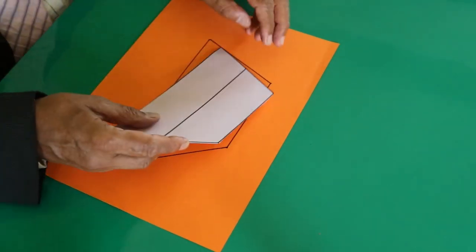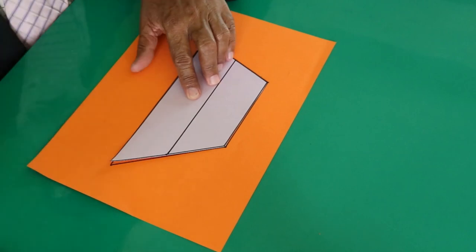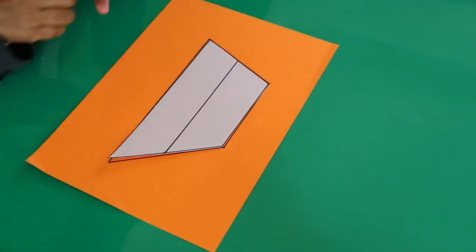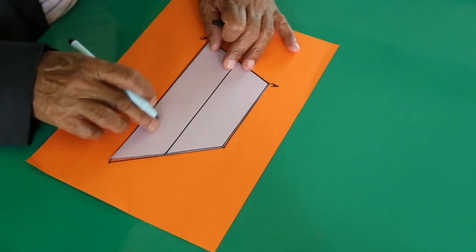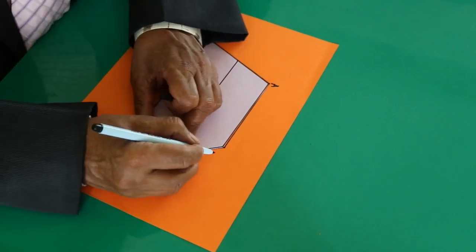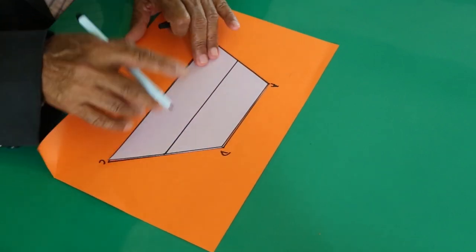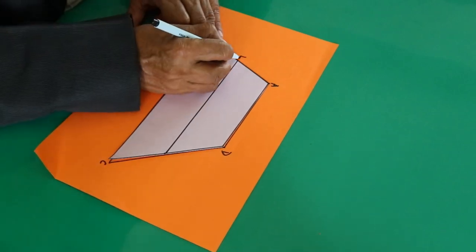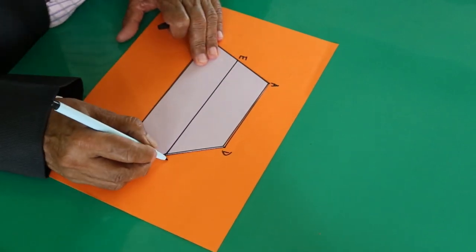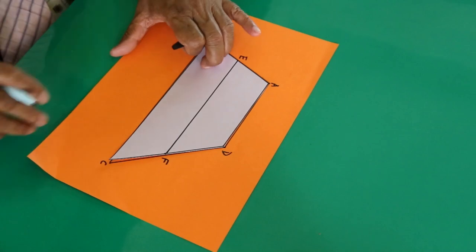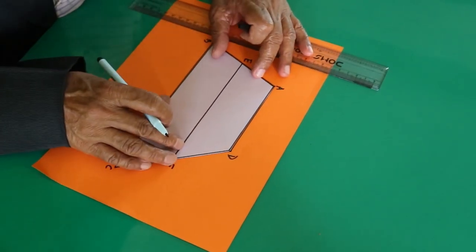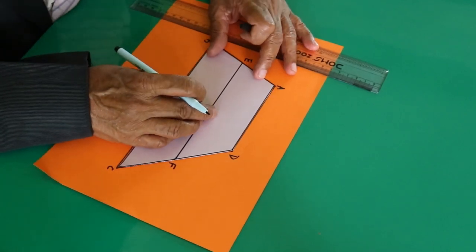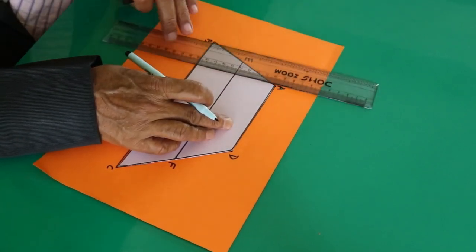Now name this trapezium ABCD and the midpoints will be EF. Draw the height on it from anywhere. This time I am doing it from this point A. So this is the height of the trapezium.